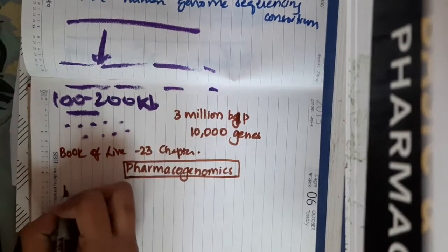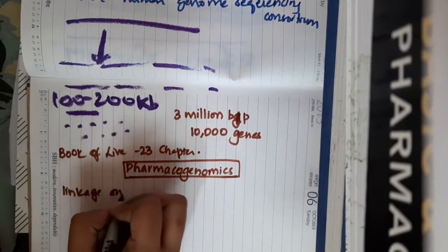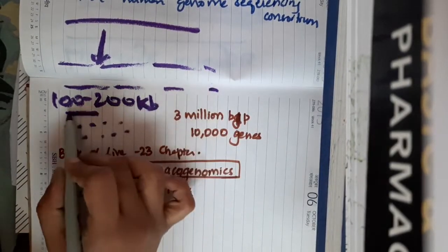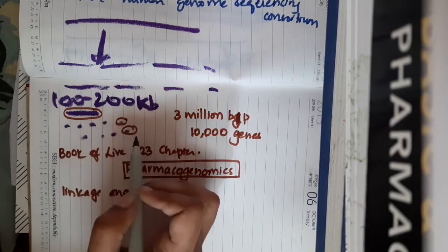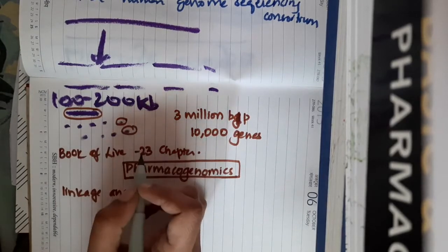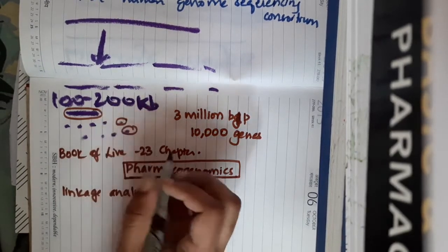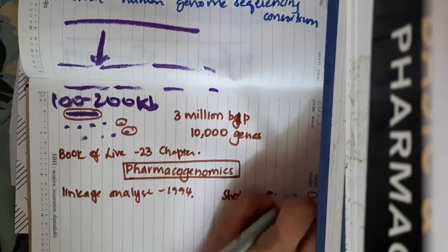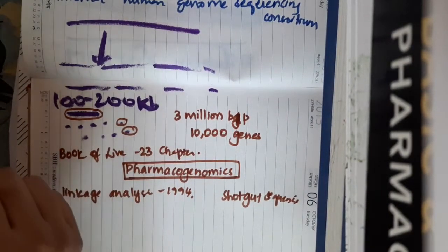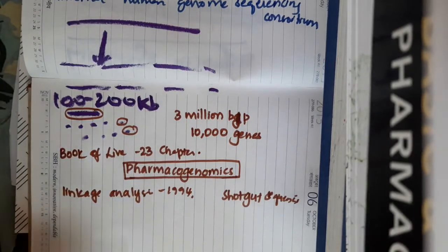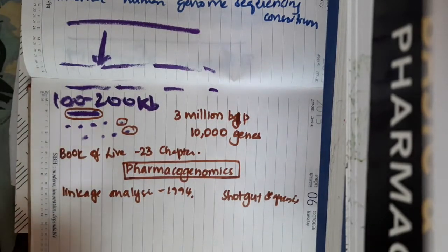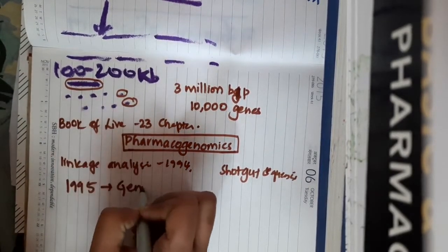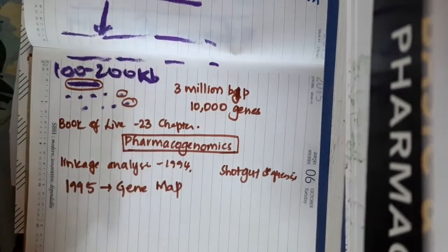This linkage analysis is completed by 1994. These smaller base pairs are divided into smaller and smaller base pairs. These smaller base pairs can be identified by a technique called as shotgun sequencing. In this shotgun sequencing method, we can break the DNA into even smaller pieces and they are sequenced. By 1994, 1995, a human gene map of all the chromosomes was published.